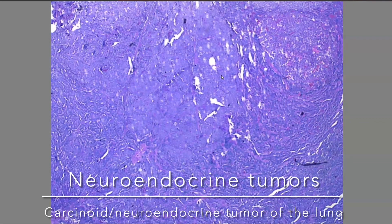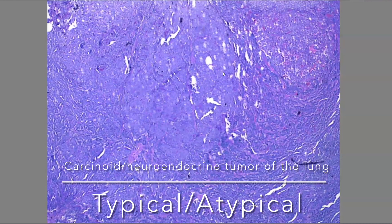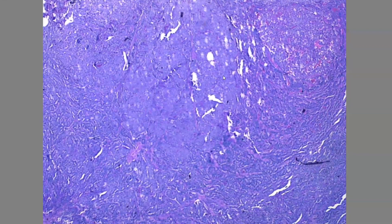Today our topic is the carcinoid neuroendocrine tumor of the lung. We have two subtypes: the typical carcinoid and the atypical carcinoid. Simply, the difference between them is about the mitotic figures.